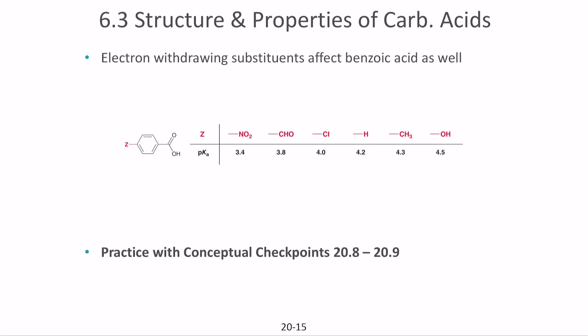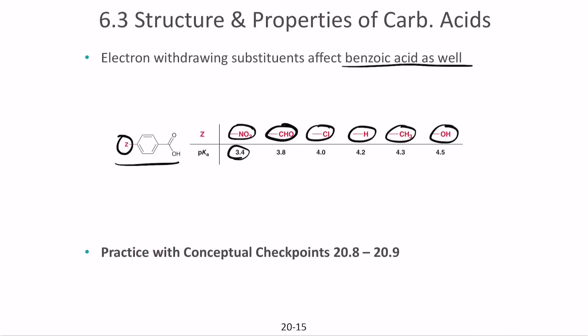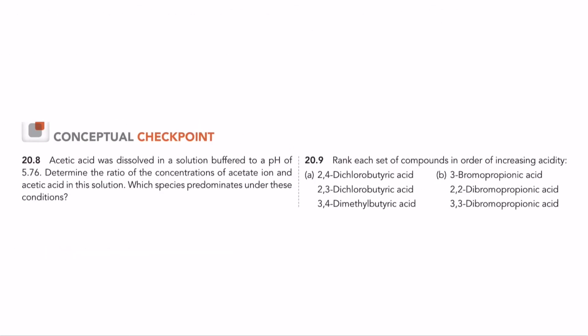Electron withdrawing substituents also affect benzoic acid. Depending on the substituent Z present, if it's NO2, it increases acidity — nitrobenzoic acid is one of the strongest forms of benzoic acid. As you move from electron withdrawing to electron donating groups, acidity decreases. Pause the video and try to solve these problems using those principles.